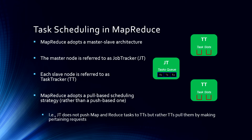In a company we have a job, and within that job we have different tasks — that is essentially what task scheduling means in Hadoop. MapReduce adopts a pull-based scheduling strategy rather than a push-based one. The job tracker does not push map and reduce tasks to the task tracker; rather, the task tracker pulls them by making pertaining requests. It's the task tracker that pulls the tasks, giving us some correlation for how MapReduce works.